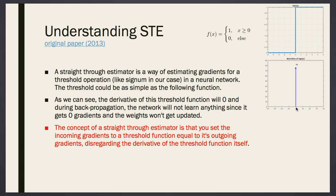So, what gradient we can use instead? A straight-through estimator is a way of estimated gradients for a threshold operation like signum in our case, in a neural network. Okay, we know this. We are going to estimate it. As we can see, the derivative of the threshold function will be zero during backpropagation, which won't stop the learning.